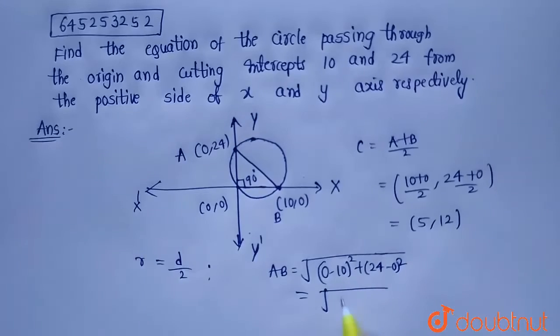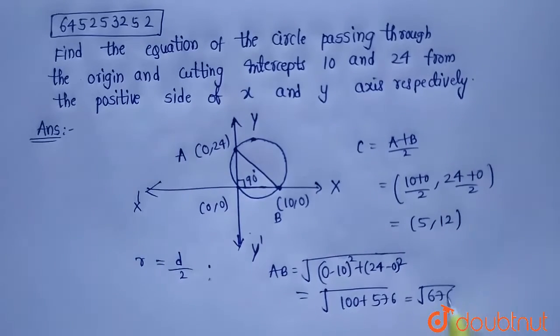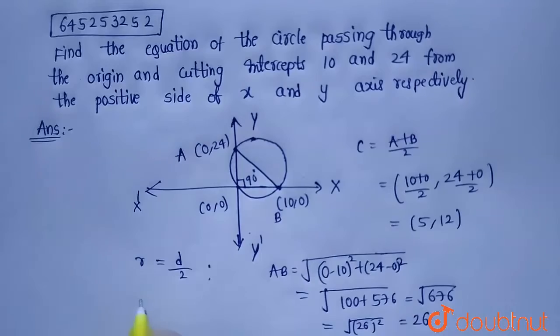So root 10 square, 10 square is 100, and 24 whole square is 576, that will be root 676, that is root over 26 whole square, which equals 26. So AB equals 26.